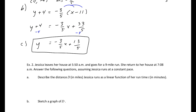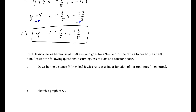Example 2. Jessica leaves her house at 5:50 a.m. and goes for a 9-mile run, returning at 7:08 a.m. We want an equation d(t) as a linear function of time. At time 0 she has gone no distance, so the point is (0, 0). At 7:08 she has run 9 miles.